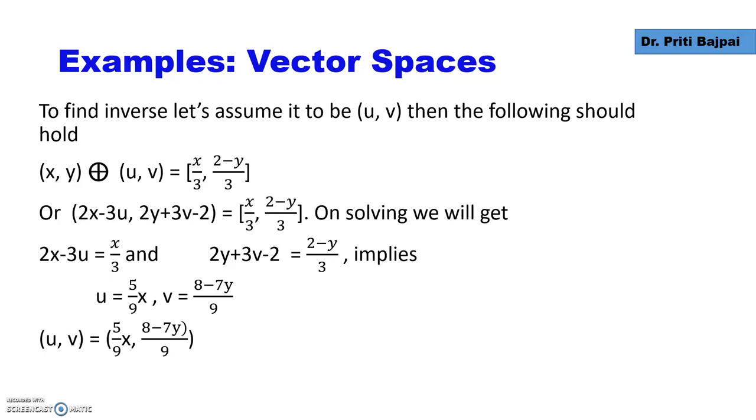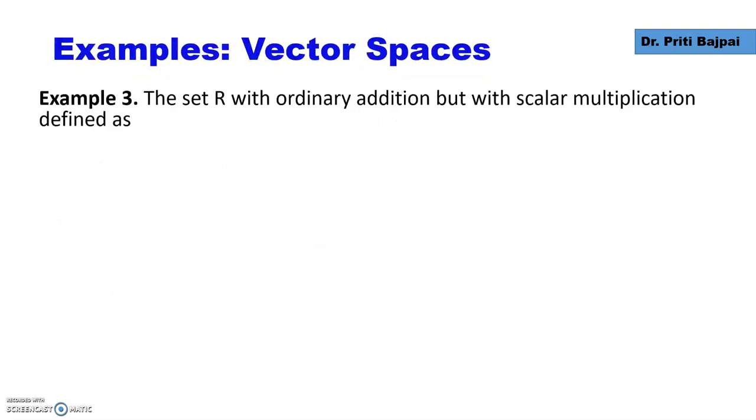So the inverse becomes this. This can always be checked. If we add, we will be getting the identity. All other properties will also hold. So we will form a vector space.